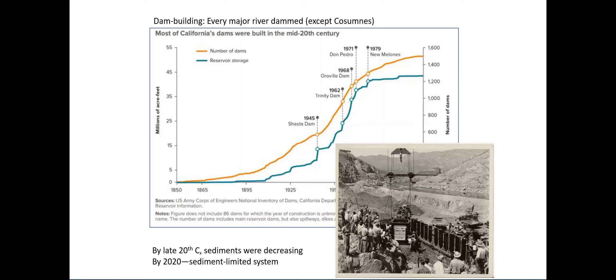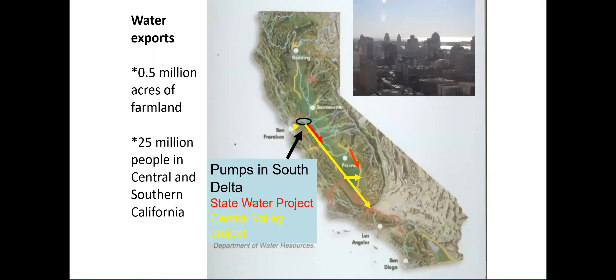The delta landscape was dramatically transformed — wetlands lost, channels straightened and buffered by levees, losing the structure that helps delta smelt surf up the tides. This started over 100 years ago. Then damming changed water movement entirely — every major river in California has been dammed. By the late 20th century, all that sediment that had been clouding the delta suddenly disappeared behind dams, so the water has been getting clearer every year. We've gone from a sediment-rich system to a sediment-starved system — and delta smelt like turbidity, so water clarification is another blow.